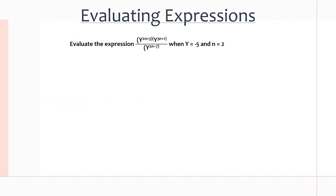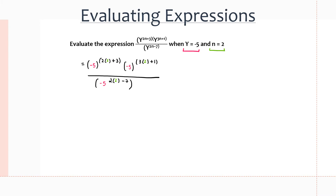In this particular question, we're given an expression and values assigned for y and n. So we simply just have to substitute these values in to simplify it. We substitute every y in for negative 5 and every n in for 2. And when we start simplifying, in the numerator, 2 times 2 which is 4, plus 3, which equals 7.